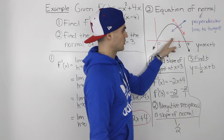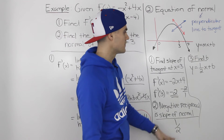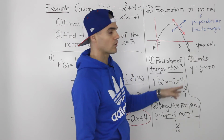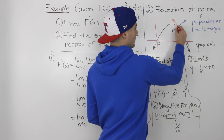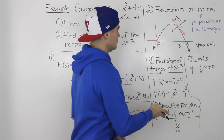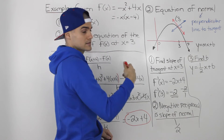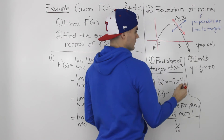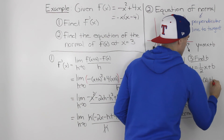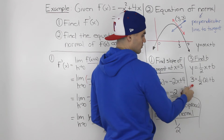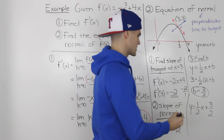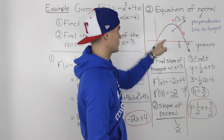Now that we have the slope of the normal, we need to find the b value in y = mx + b. So far we have y = (1/2)x + b. We need a coordinate on the normal — we can use the point on the function at x = 3. Plugging 3 into f(x) gives a y value of 3 as well, so the coordinate is (3, 3). Substituting: 3 = (1/2)(3) + b, so 3 = 3/2 + b, giving b = 3/2. The final equation of the normal is y = (1/2)x + 3/2.